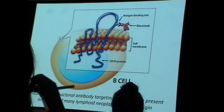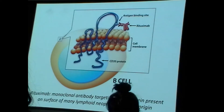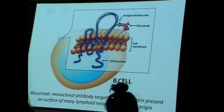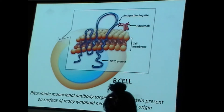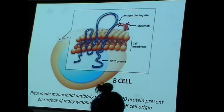Many chemotherapy regimens designed to treat leukemia and lymphoma may include a drug known as rituximab. Rituximab is a monoclonal antibody — the -mab at the end of the drug name — that targets a particular protein present on the surface of almost all B-cells. It's a nifty target for treating B-cell cancers.